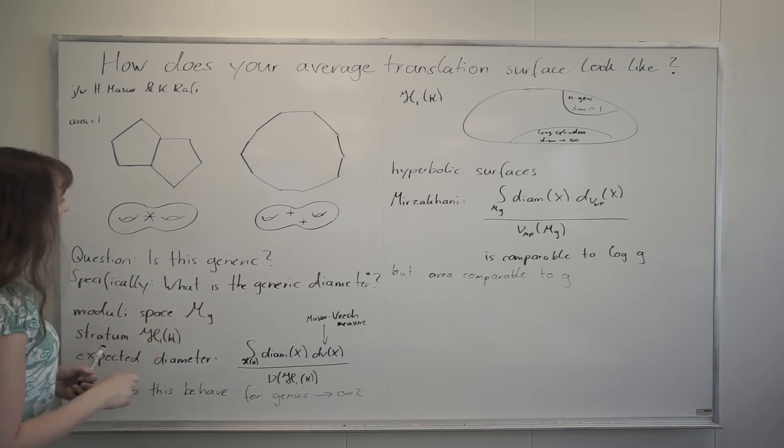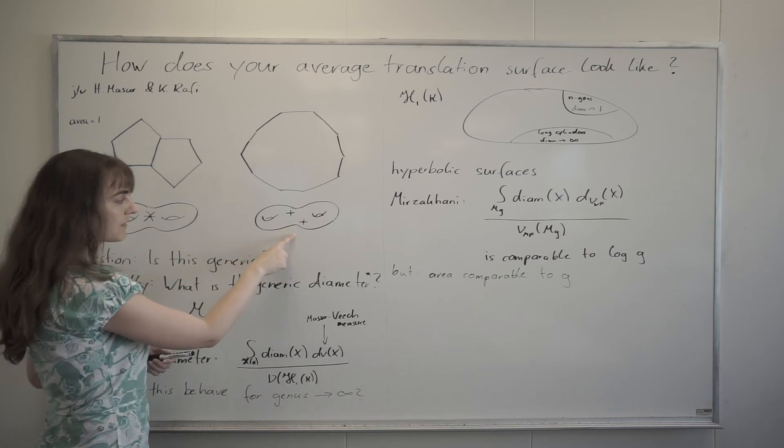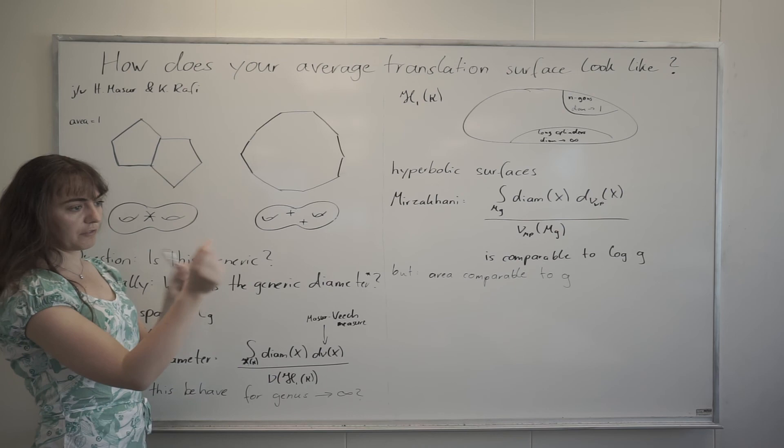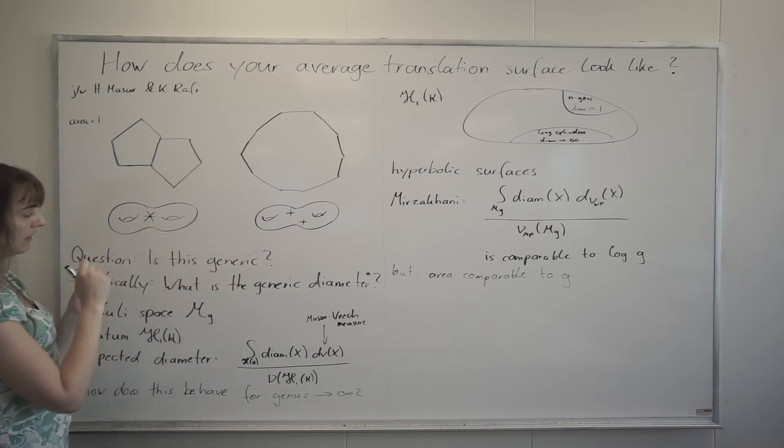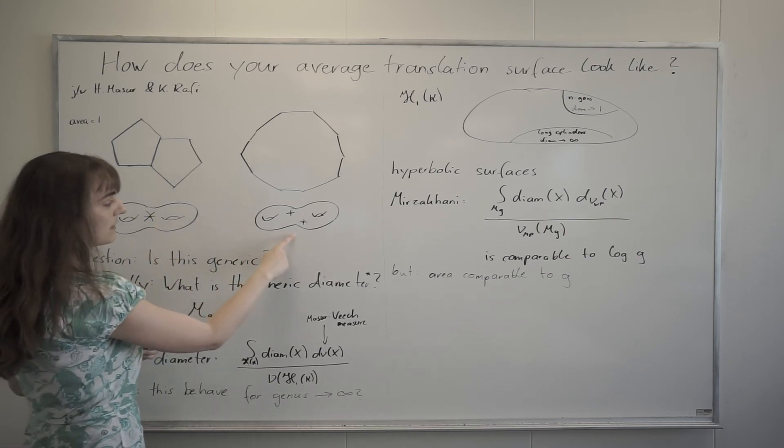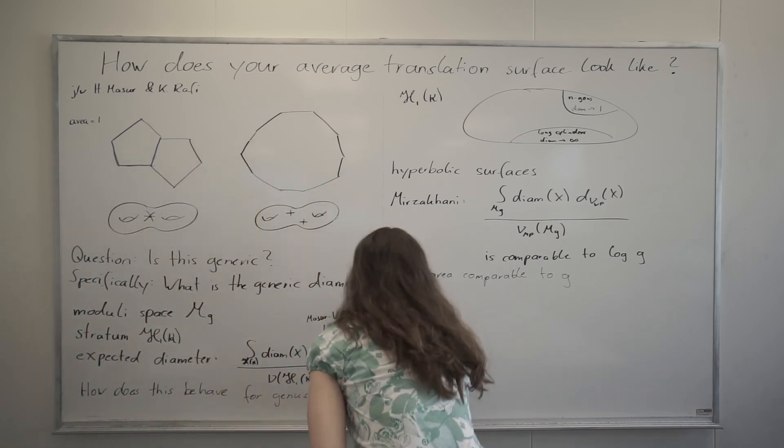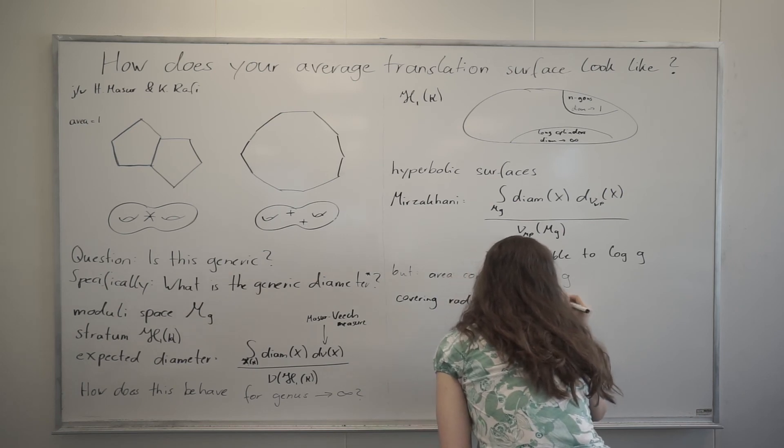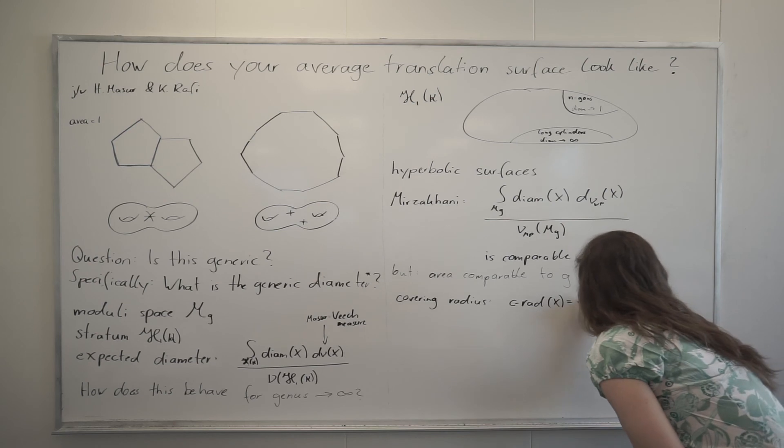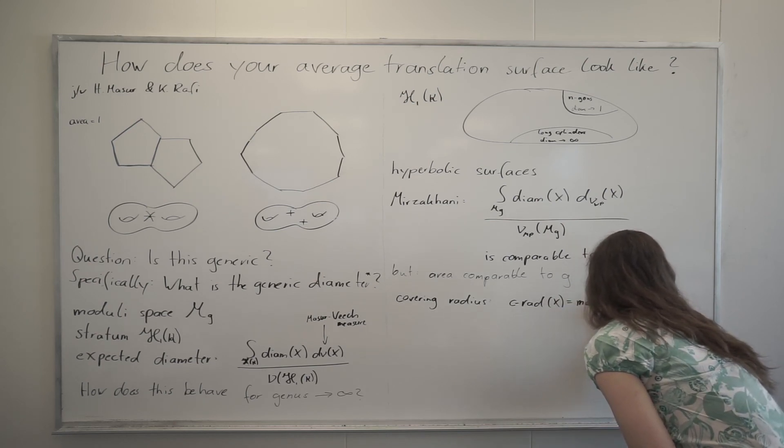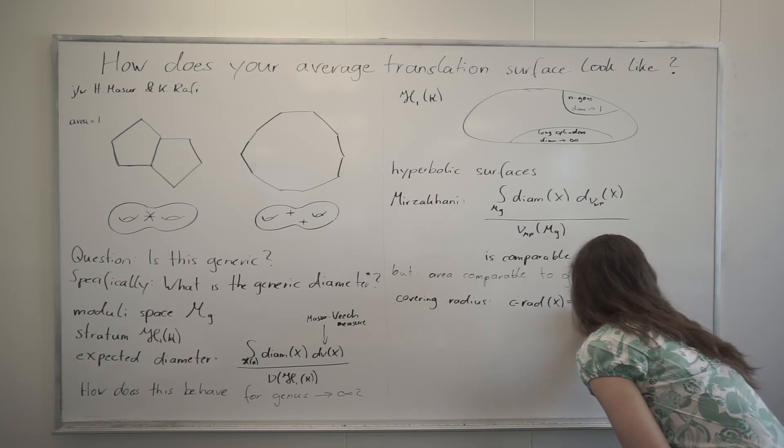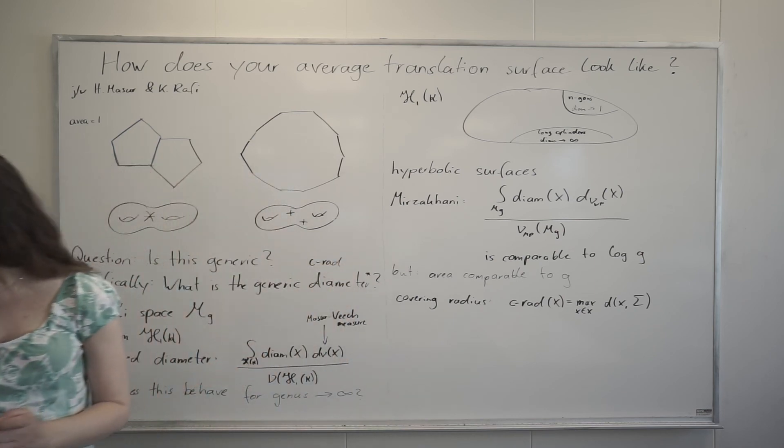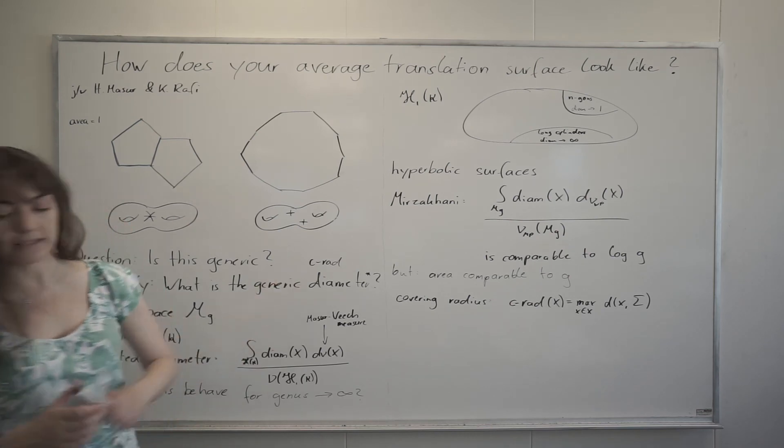I was always talking about diameter. And in this case, it's what we are talking about. But in this case, we want to also take into account that we have two singularities. So we don't look at the distance of two points to each other. Or we can express that similarly as distance of a point to the singularity. But we look at the distance of a point to the set of singularities. And this quantity is called covering radius. So the covering radius of a surface X, I want to describe as the maximum distance that a point in X can have to the set of singularities. And that's what I want to replace the diameter with now, with this covering radius.